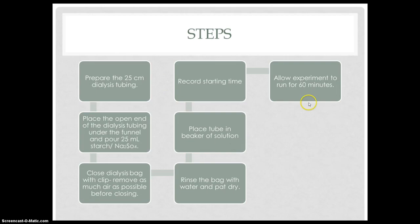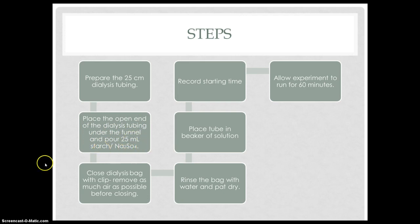Our experiment, part one. We prepared the 25 cm dialysis tubing, meaning that we clipped one end of the tubing and opened up the other end. Then we placed the opened end of the dialysis tubing under the funnel and poured 25 ml of starch or Na2SO4. Then we closed the dialysis bag with another clip, removing as much air as possible before closing. Then we rinsed the bag with water and pat dry.